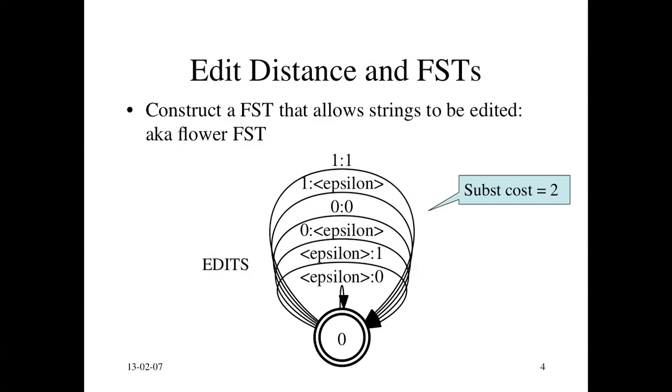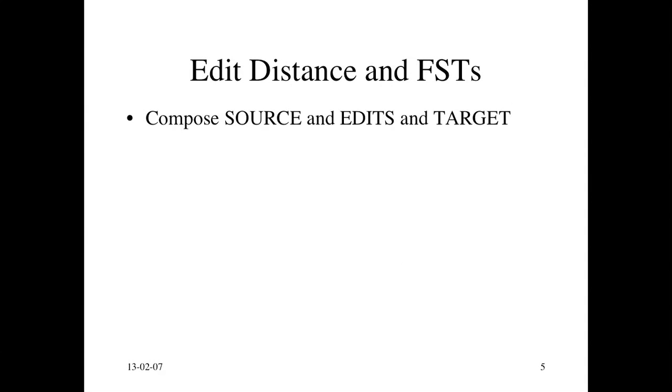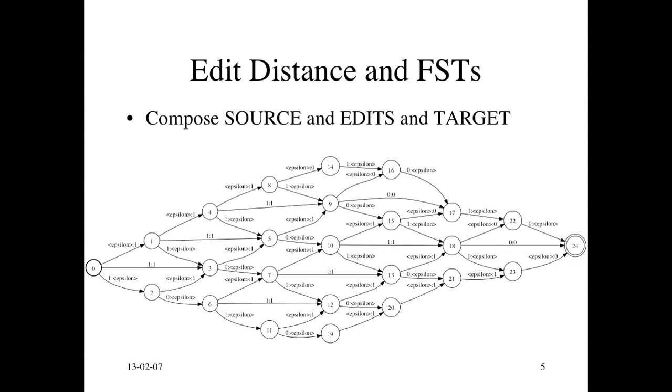And the next step, so the important thing to note here is that the substitution cost here will be 2 because you cannot just substitute 0 for 1. You have to do a deletion and then insertion, or insertion then a deletion. And the next step, just compose them together. And what you get is something that looks like this. Well, it looks pretty hairy, but actually it's exactly analogous to the distance matrix we constructed.